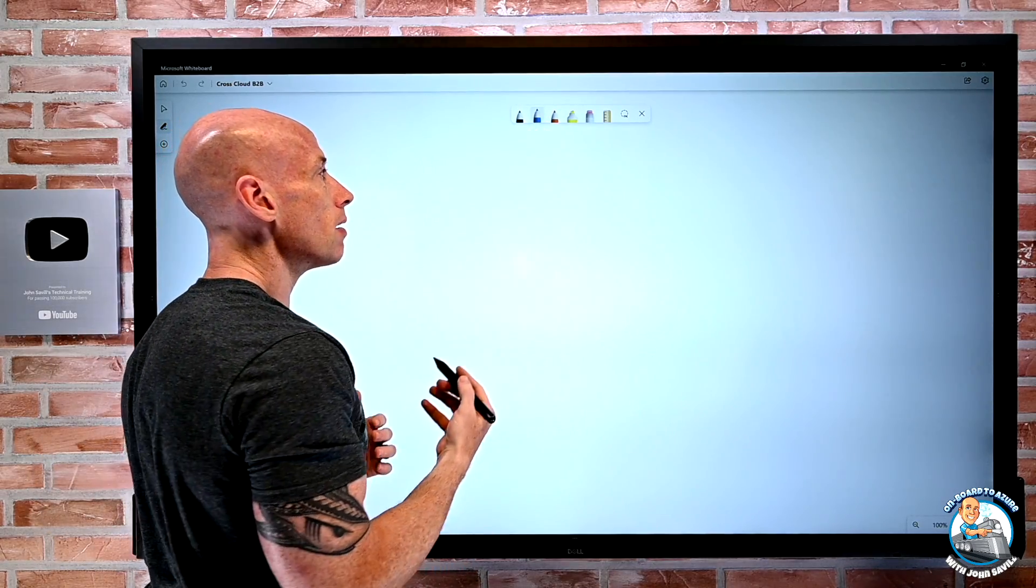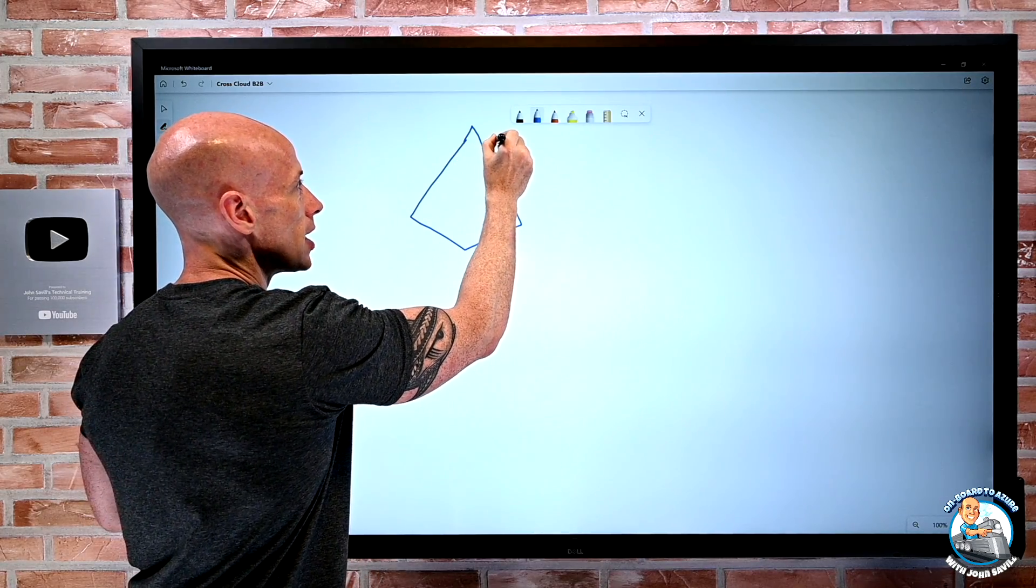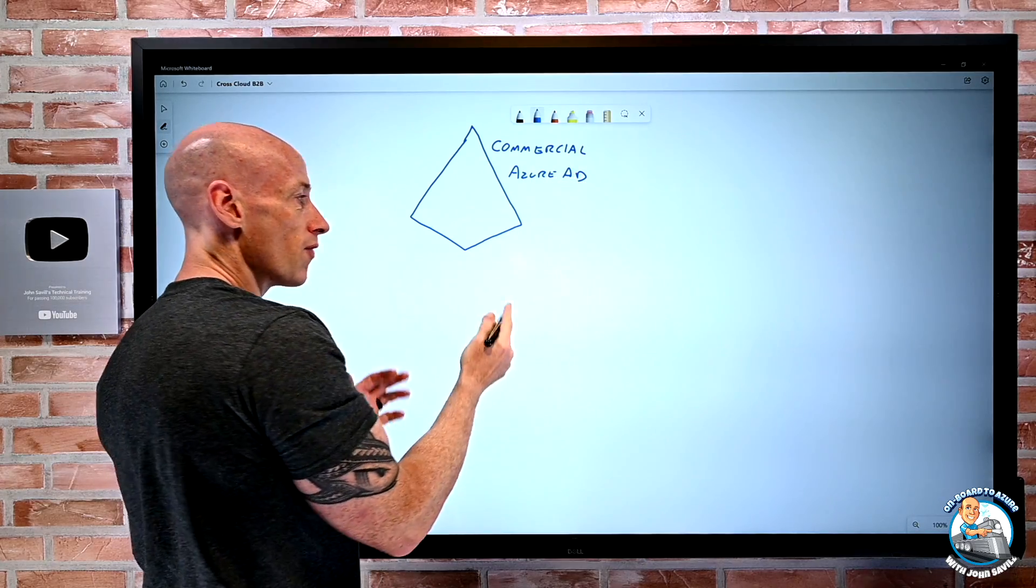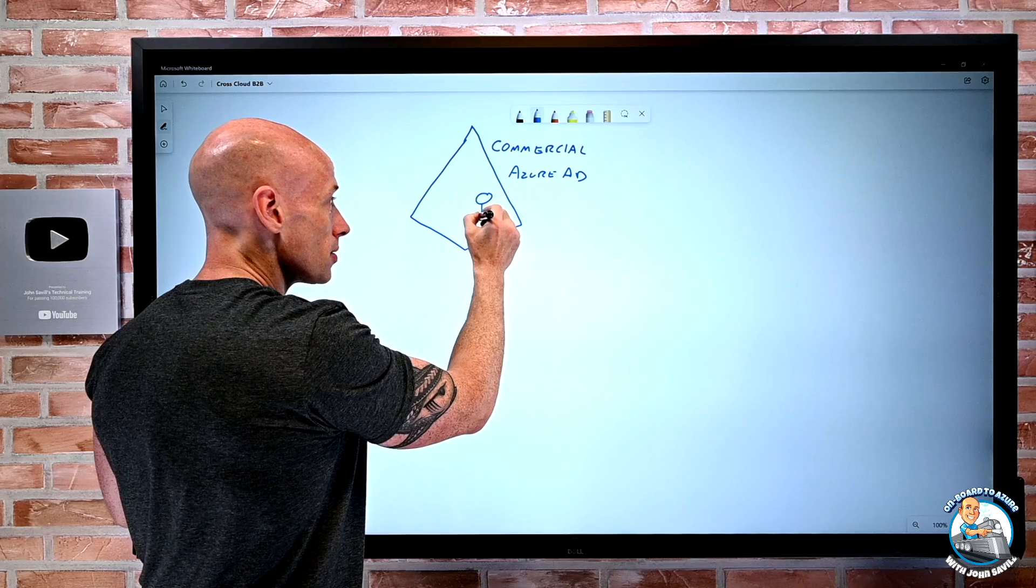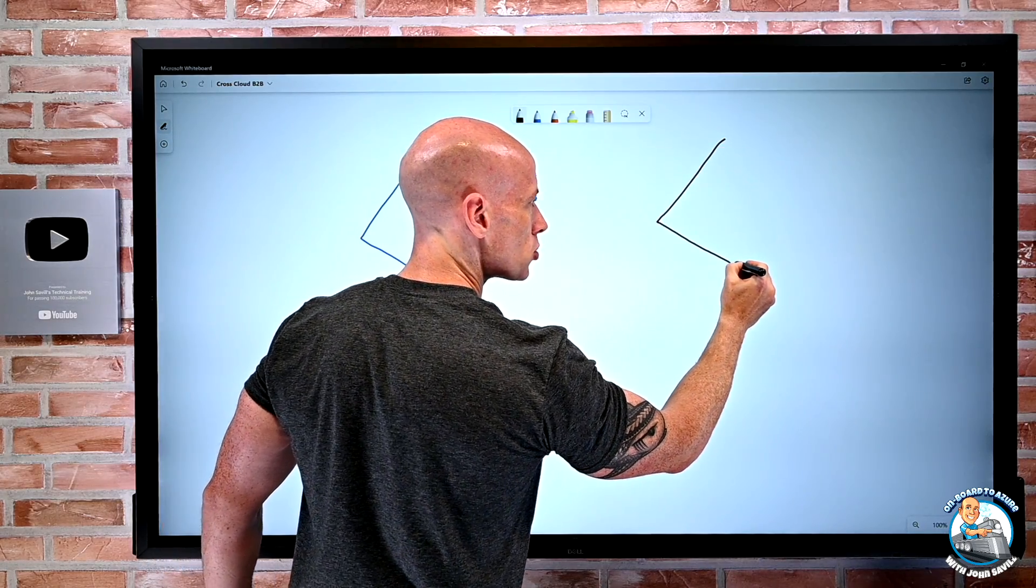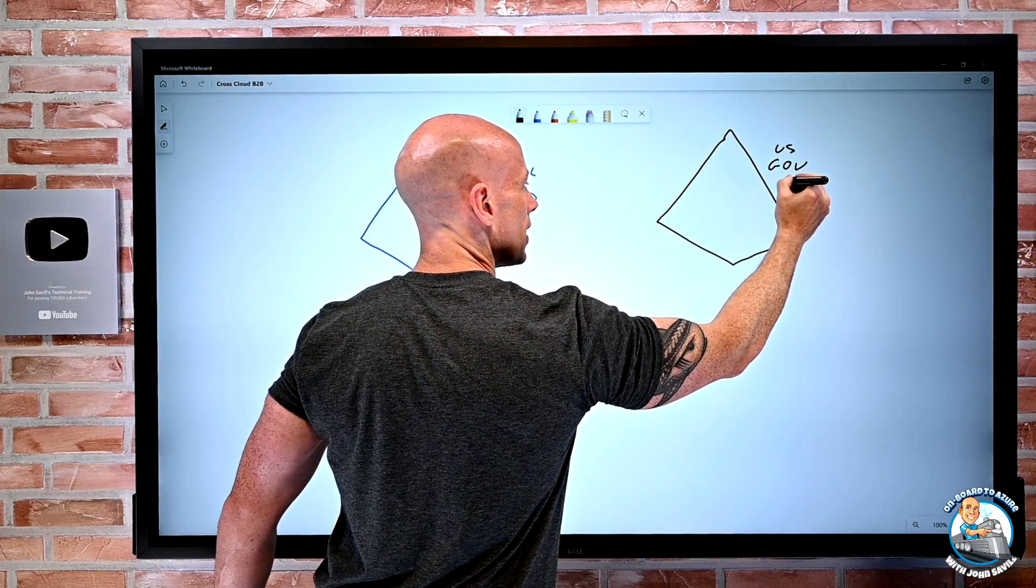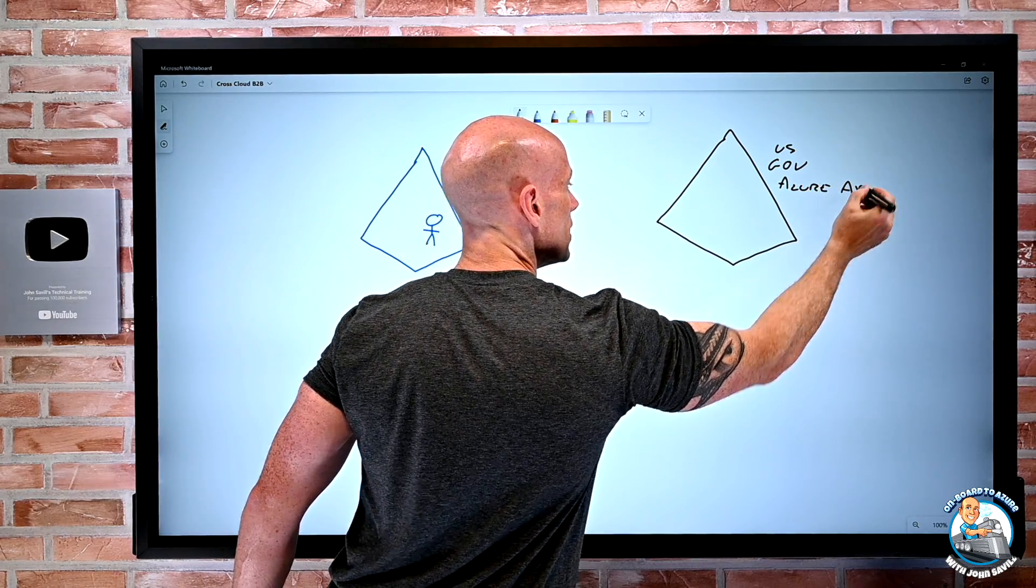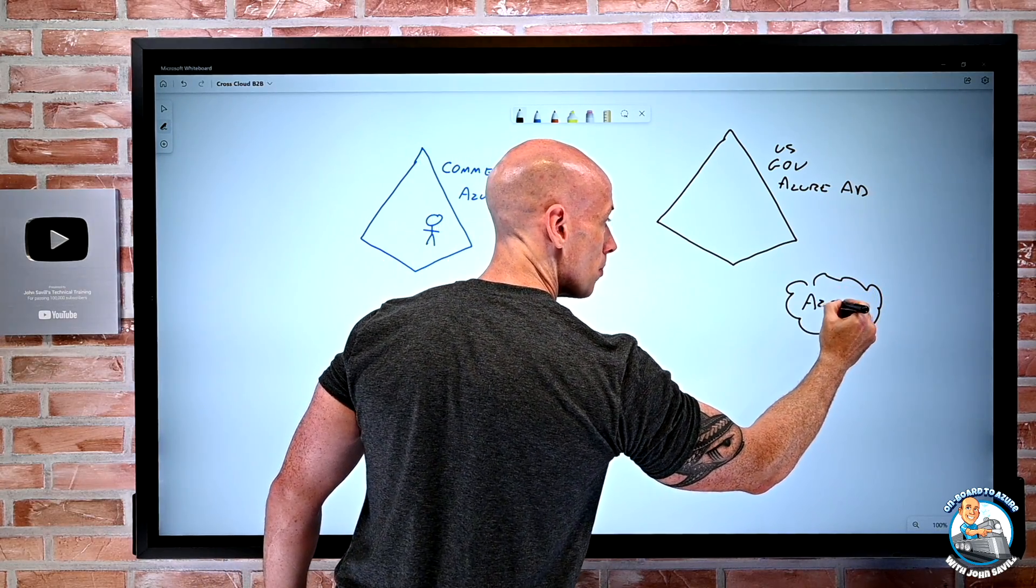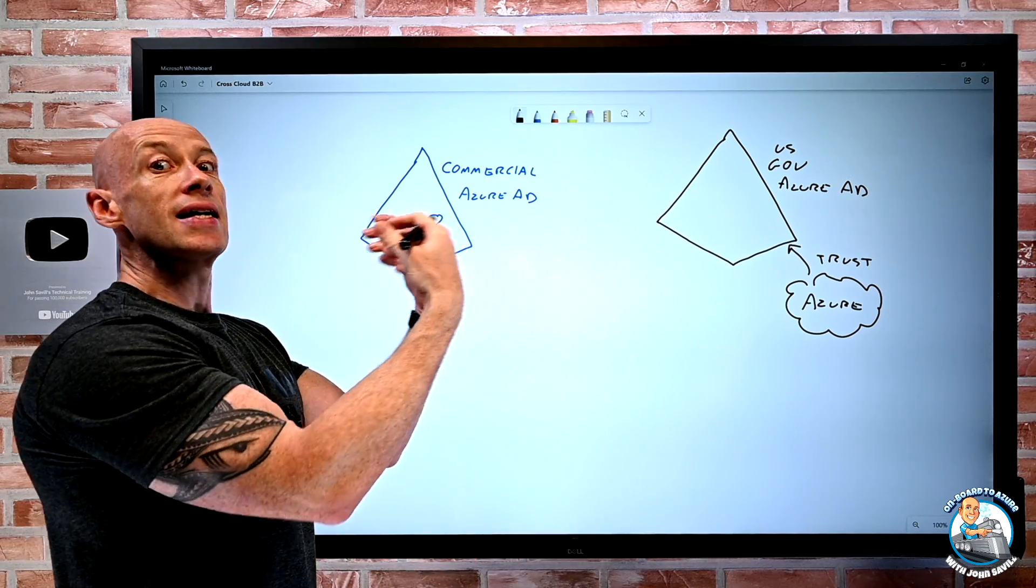So as a company, I can think about I have my existing Azure AD, my commercial Azure AD instance. I've got various resources trusting that and various users in this Azure AD. And maybe I also have a US Gov Azure AD or maybe it's a China Azure AD. But in this case, I have a US Gov Azure AD as well. And maybe there are some resources hanging off that, maybe it's actually Azure subscriptions that trust that. So that's an Azure subscription in US Gov that obviously has to trust a US Gov Azure AD.